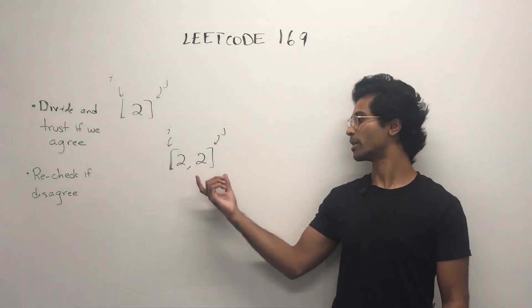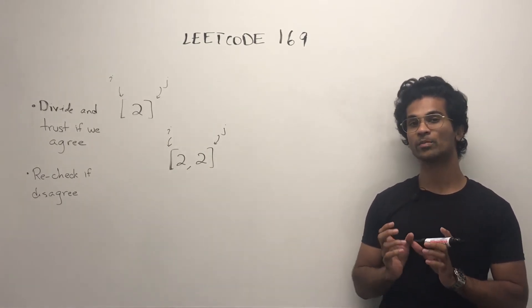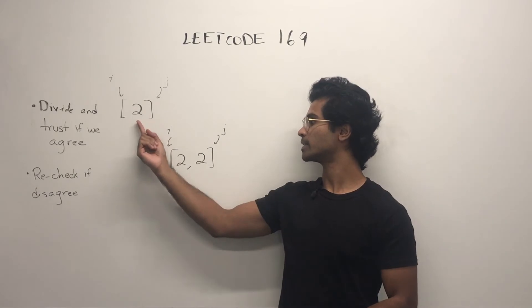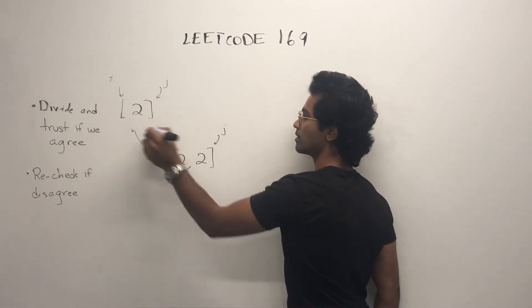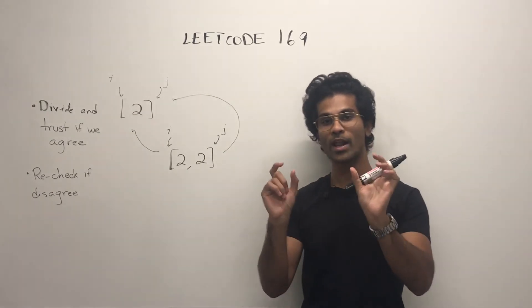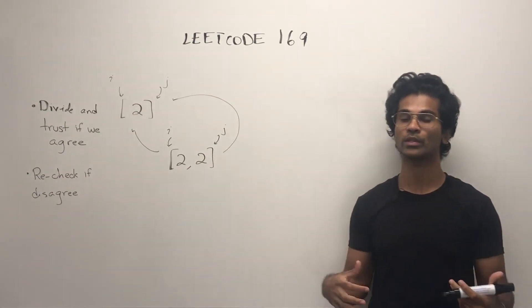If this was our input, we take this, split it in half, and this recurses down and boils down to this. So both of these are going to break down into one integer arrays, and they're both going to return true.